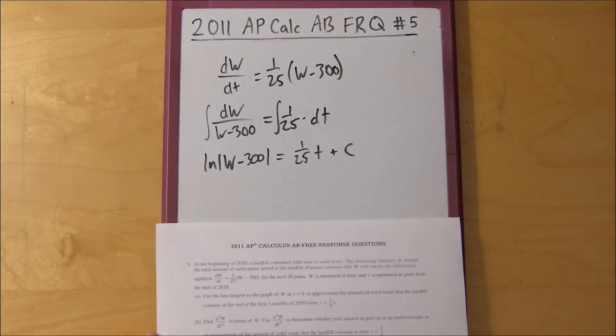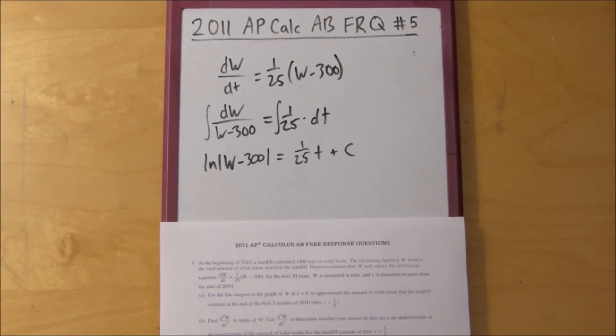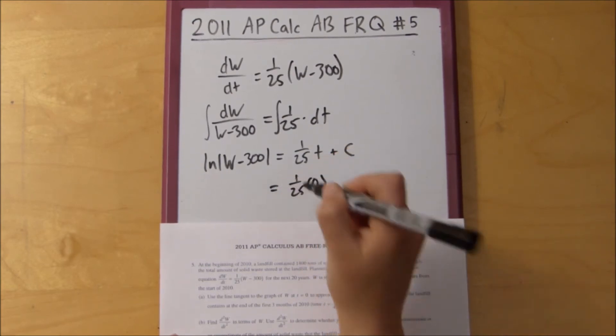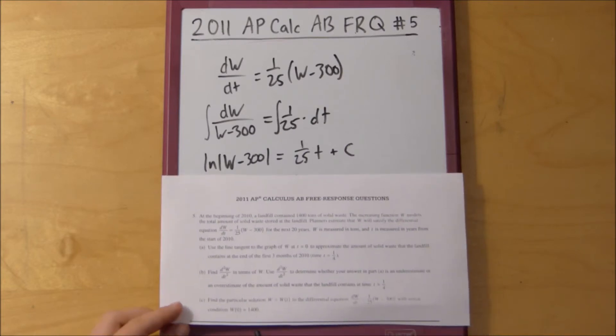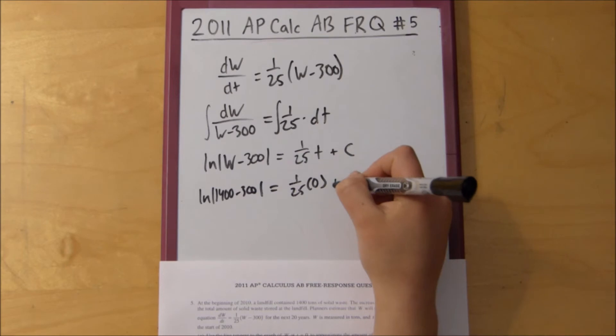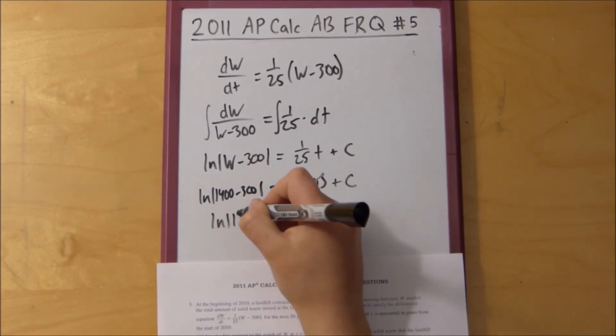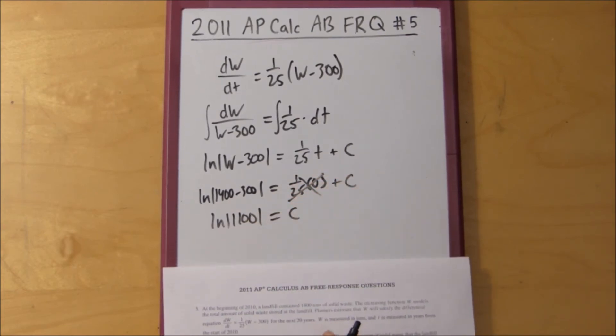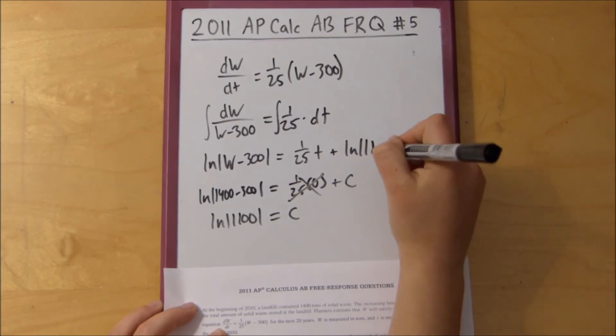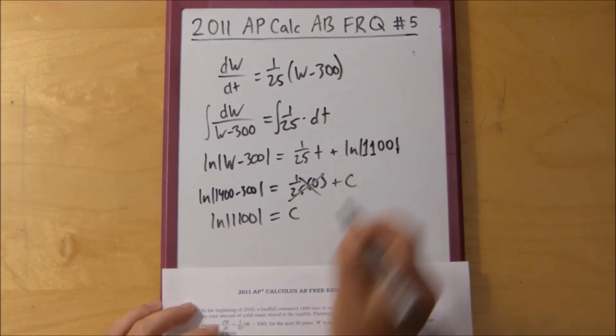So at this point, some people might want to continue and simplify this out, but what I like to do is I like to plug in the initial condition right away because there is a possibility of messing up later on, but with this you get the right constant of integration. So we were told that when t equals 0, so plug that in, we were told that w equals 1400. So ln of 1400 minus 300 equals 1 over 25 times 0 plus c, so this just goes away. We get ln of 1100 equals c. So we can go back to this step and just replace c with ln of 1100.